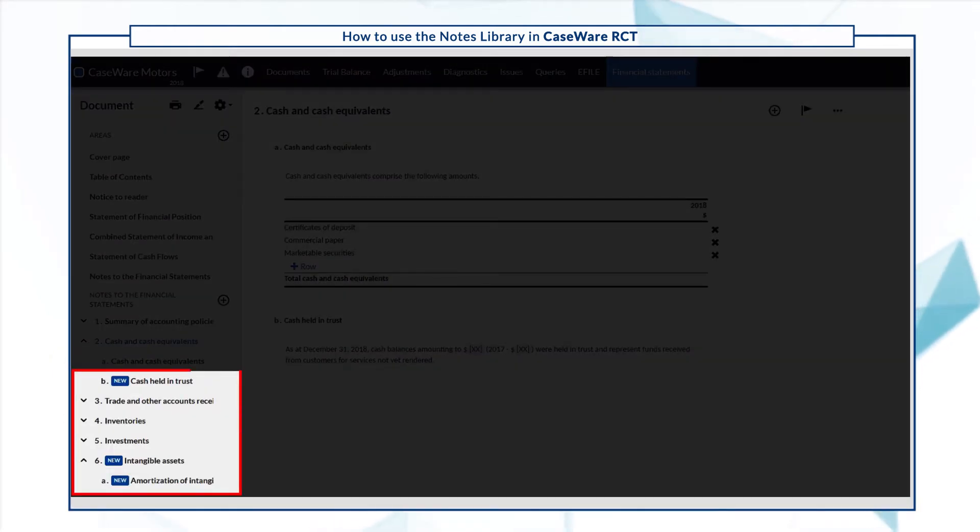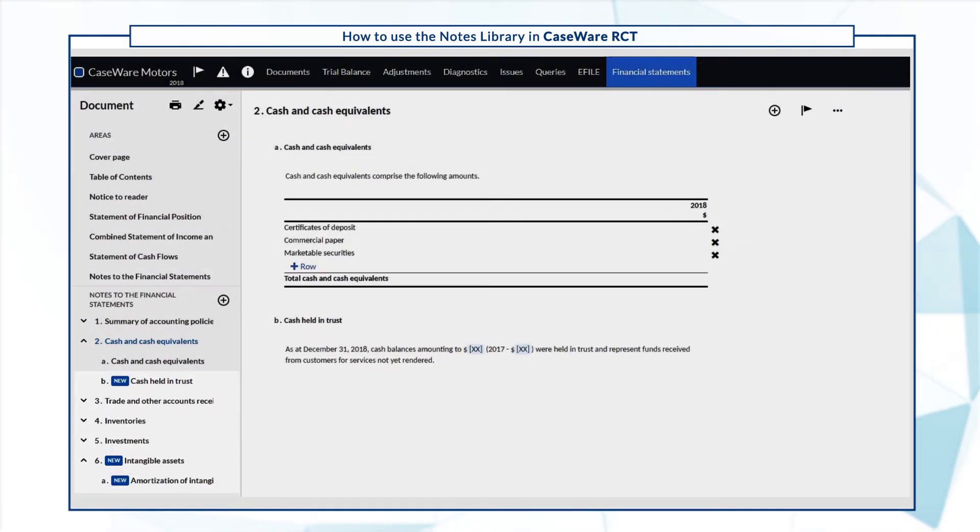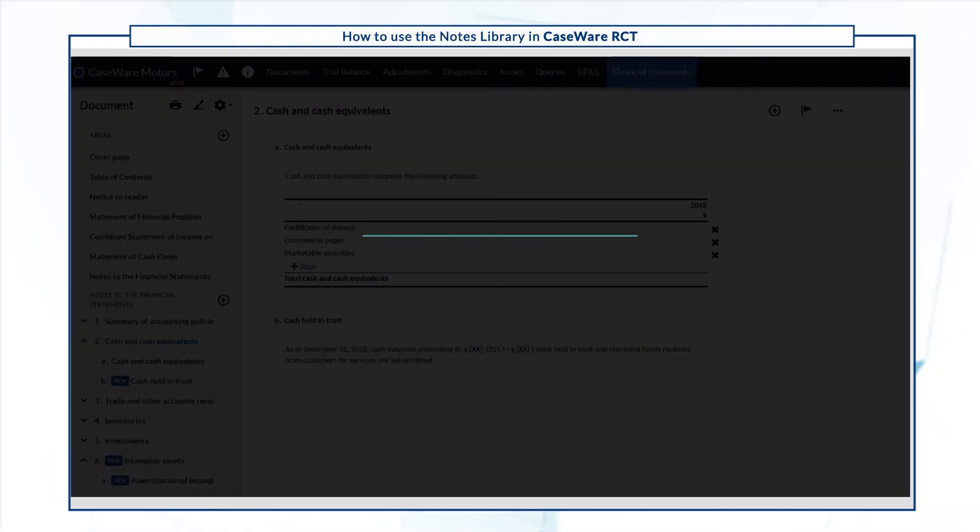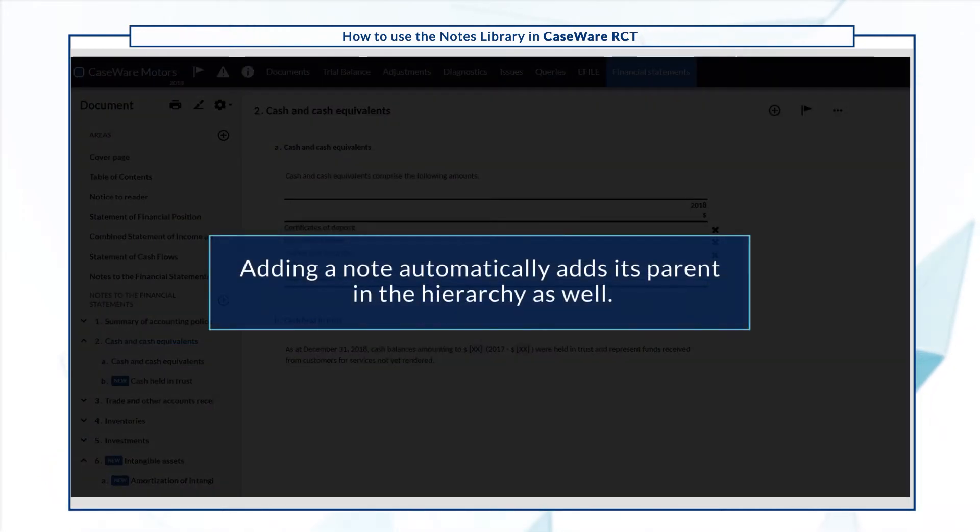Newly added notes are marked in the document map for your convenience. Note that when we added amortization of intangible assets, intangible assets was automatically added as well. This is because adding a note automatically adds its parent in the hierarchy as well.